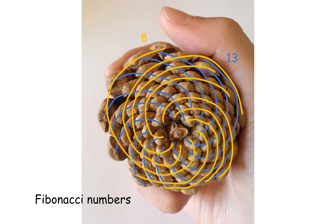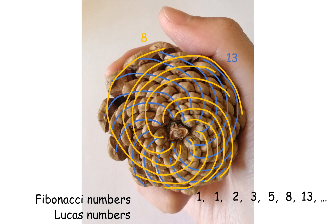Fibonacci numbers are numbers in the sequence 1, 1, 2, 3, 5, 8, 13 — each number is the sum of the two previous numbers. Lucas numbers are numbers in the sequence 1, 3, 4, 7. Either way, each number is the sum of the two previous numbers.